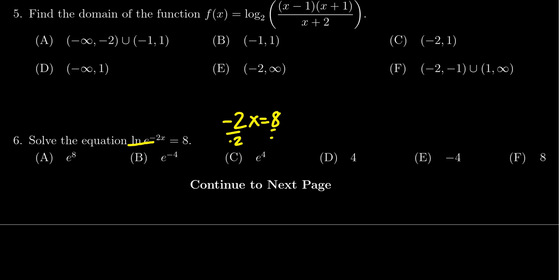Divide both sides by negative two, we then see the correct answer would then be x equals negative four. Thus, we get choice e.